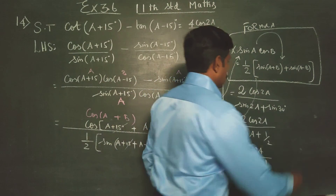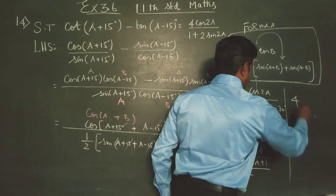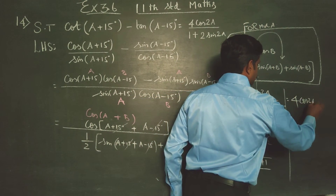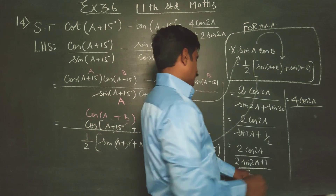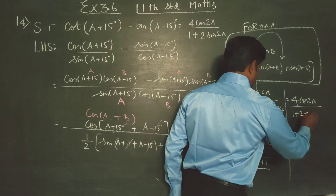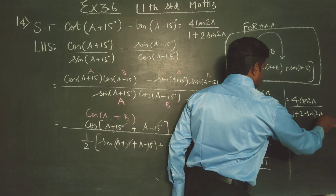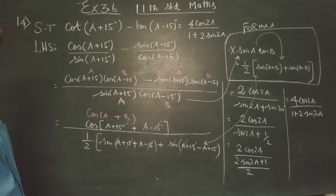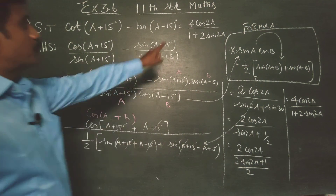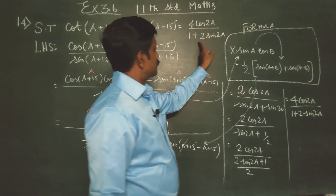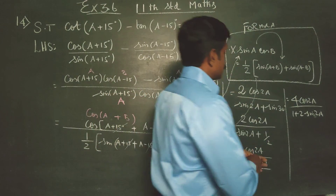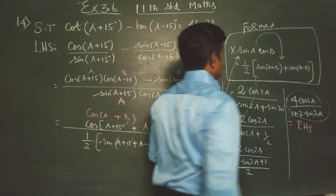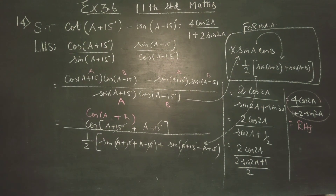Your answer will be 4 times cos(2a) by 1 plus 2sin(2a). So 4cos(2a) by 1 plus 2sin(2a), and this is the RHS. The result came out — proof complete. Thank you.